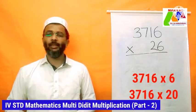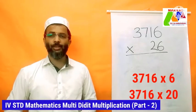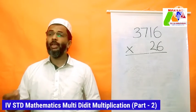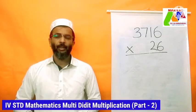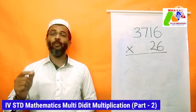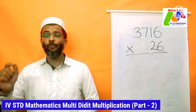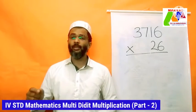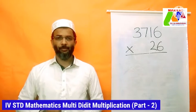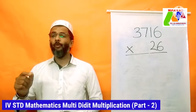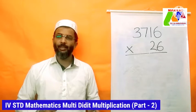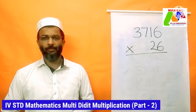So let's multiply 3,716 by 26. We do the same procedure for each of the bottom digits. Since our top number has four digits, there will be four multiplication steps for the first digit and four steps for the second digit — eight steps total. We start the same way as before, ignoring the second digit until we finish the first four steps.